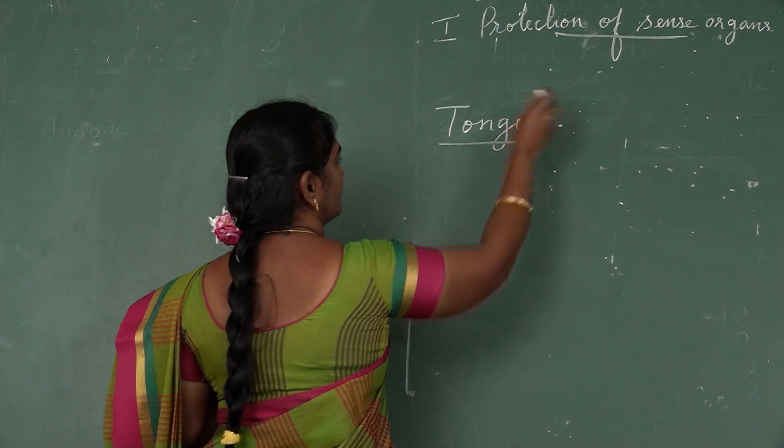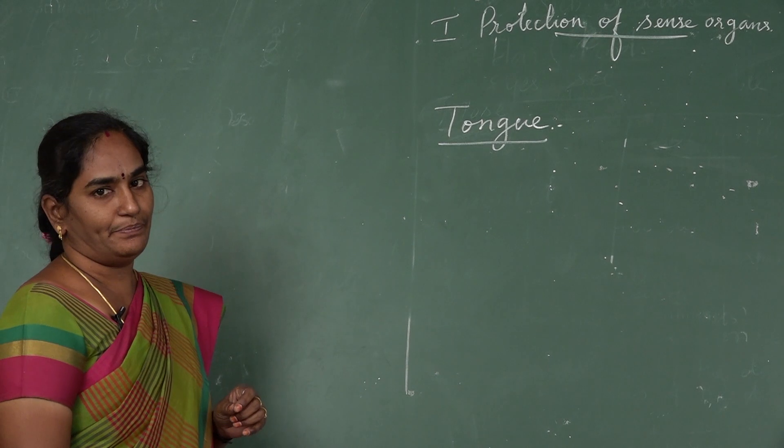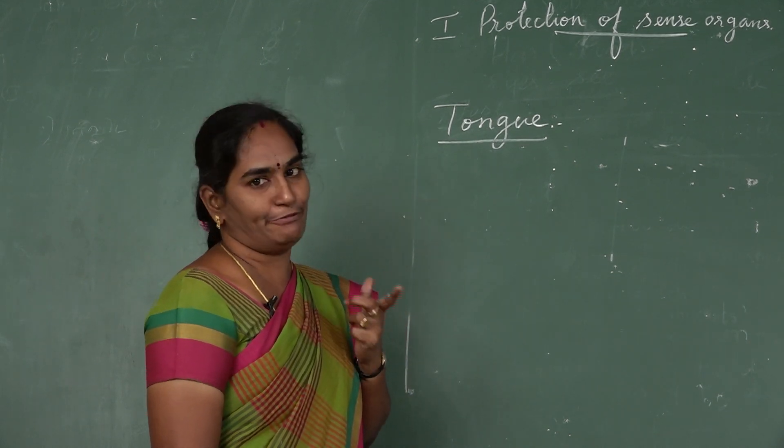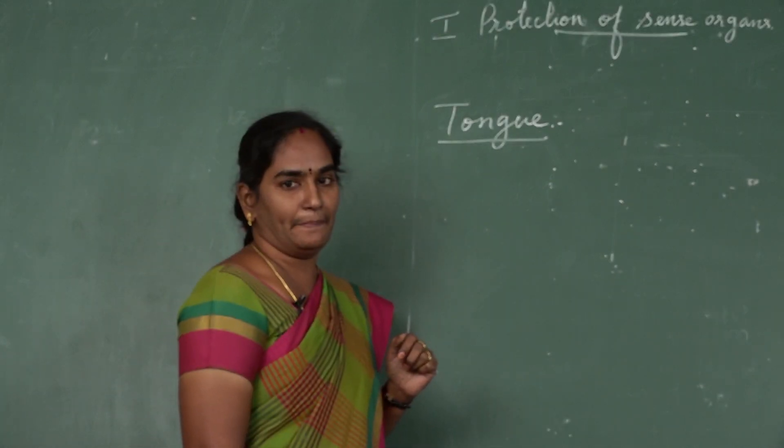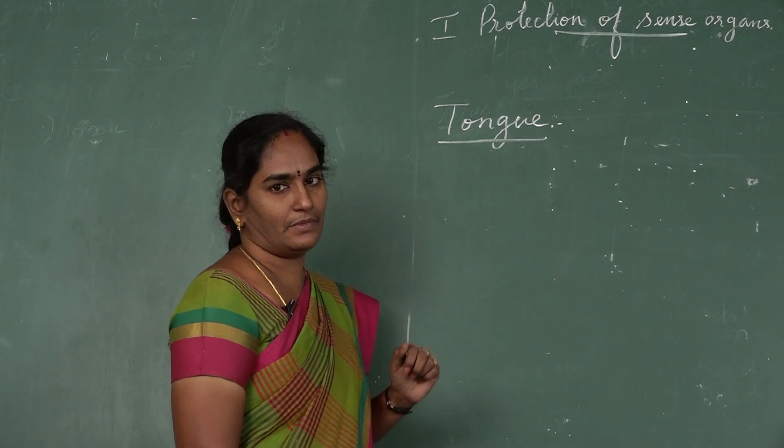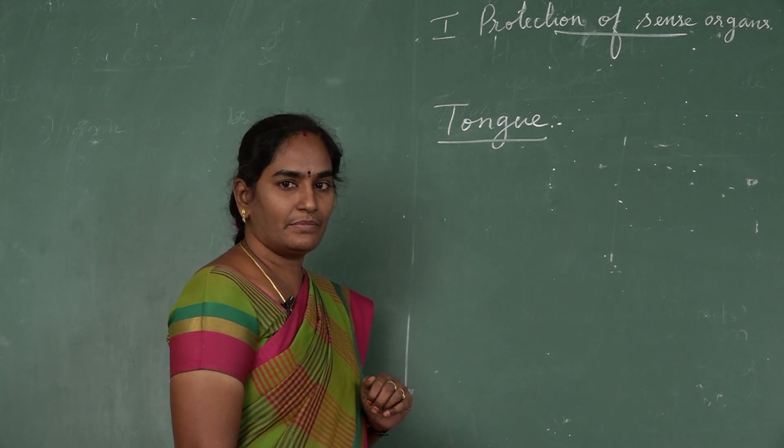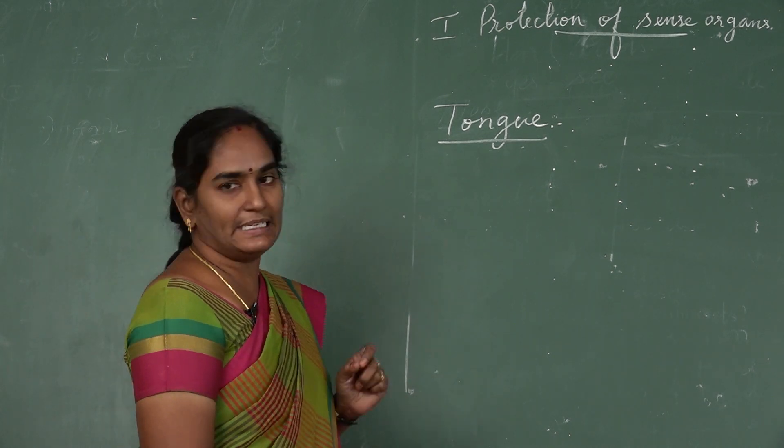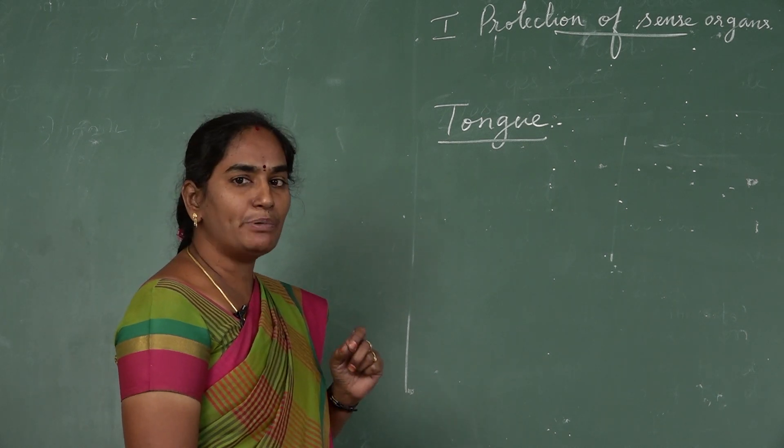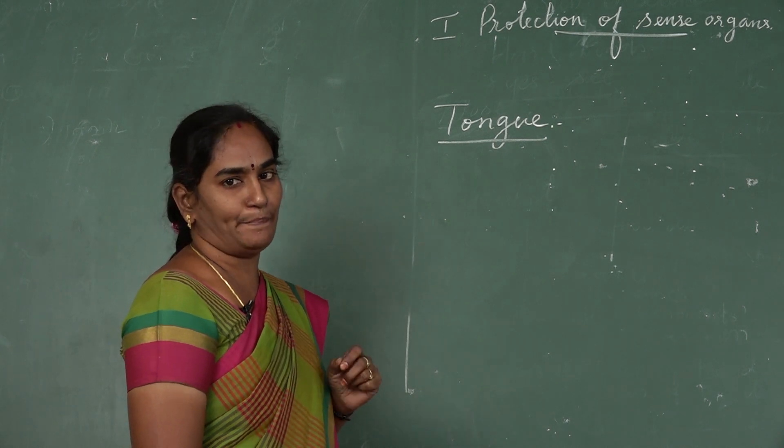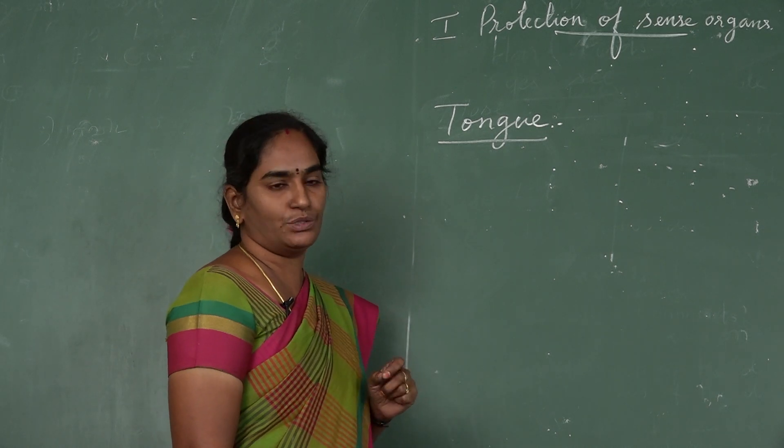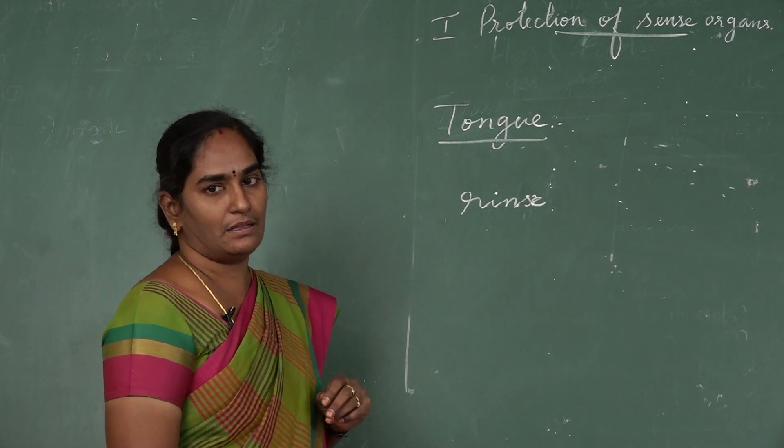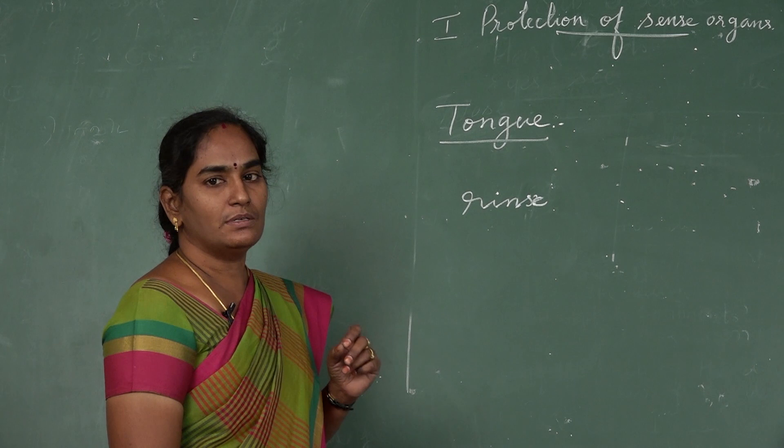Next organ is tongue. Tongue helps us to taste the food. Thousands of taste buds are present in our tongue that help us to taste the food. Tongue is a muscular organ. How to protect it? You want to clean your tongue daily by using tongue cleaner when you are brushing. Dirty tongue causes bad breath. Clean tongue helps us to pronounce the words clearly. You must rinse your mouth after eating meals or snacks. It helps to cure some oral problems.